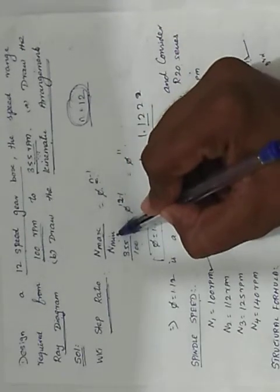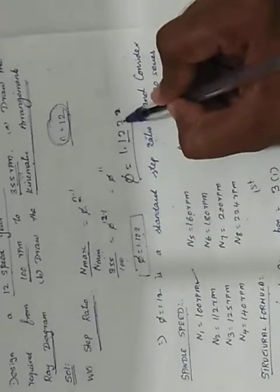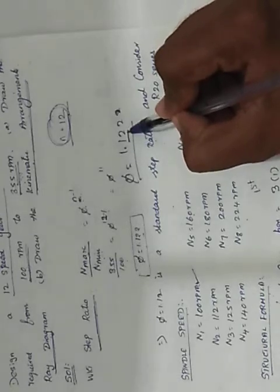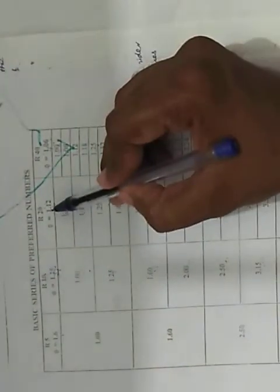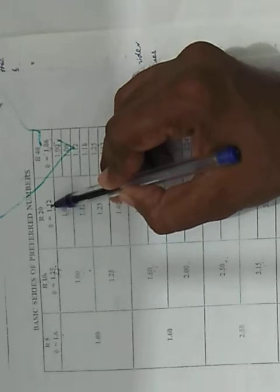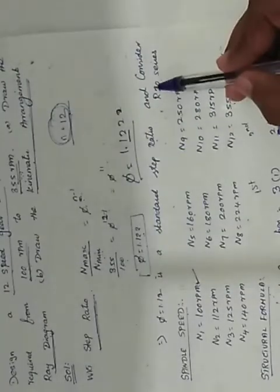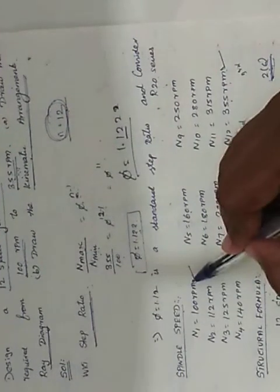Substituting the given maximum and minimum speeds, we get φ approximately equal to 1.122. Rounding to two decimal places and checking the PSC data book page number 7.20, this is a standard step ratio. It falls under the R20 series.